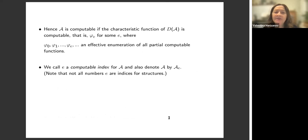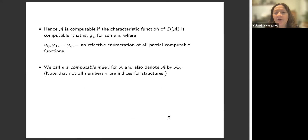A structure A is computable if the characteristic function of its atomic diagram D of A is computable. That characteristic function can be found in the list of all partial computable functions, so it is some φ_e in an effective enumeration of all partial computable functions φ_0, φ_1, and so on. We call such e a computable index for A, and we denote the structure A by A_e.